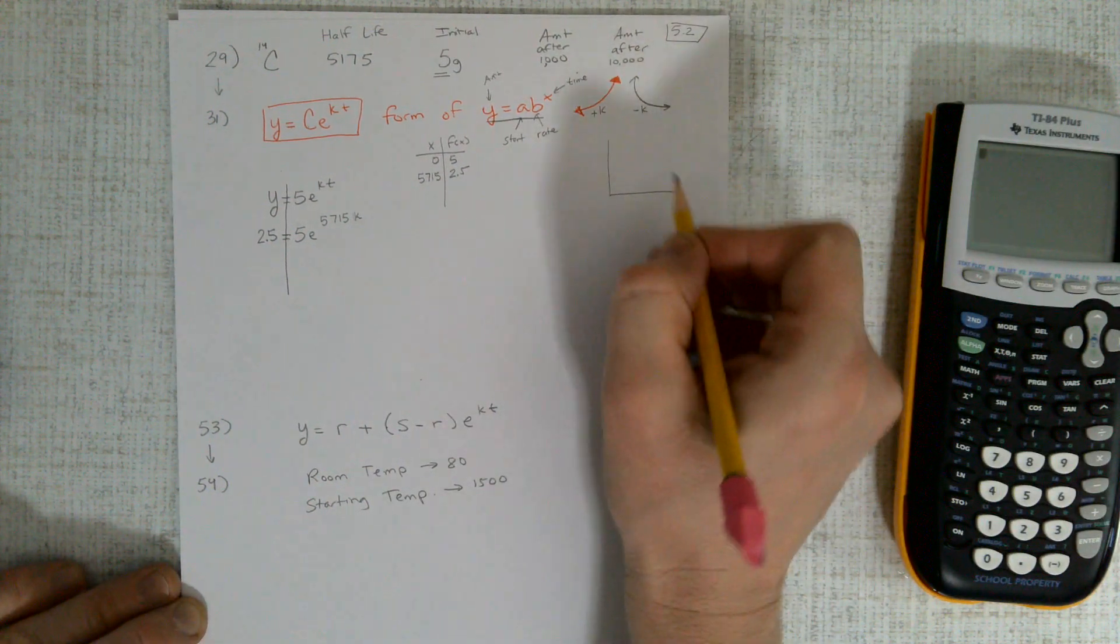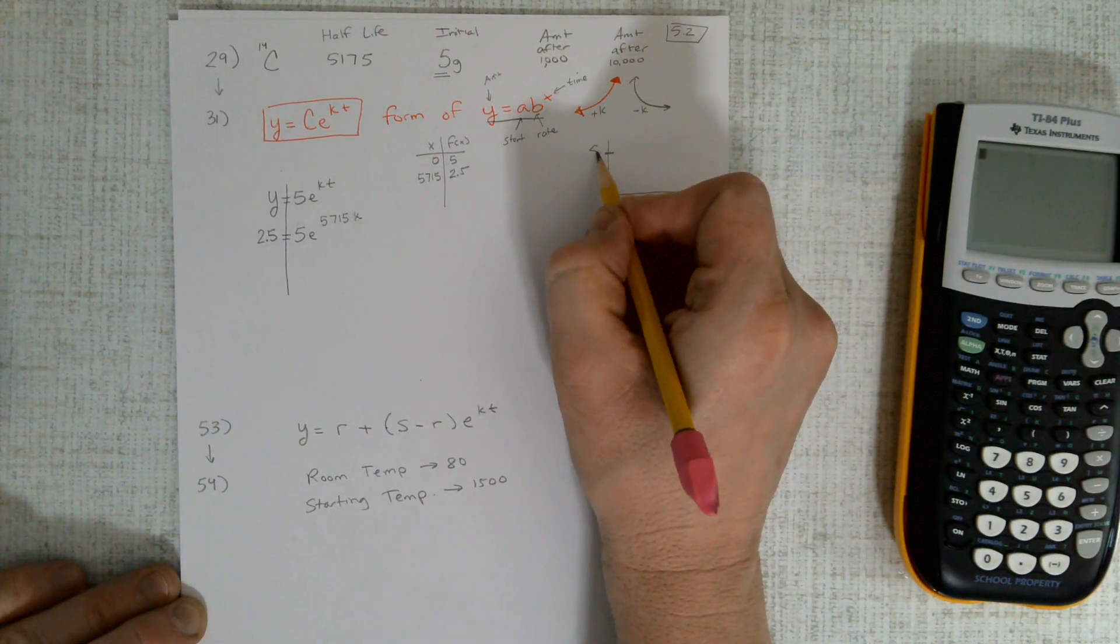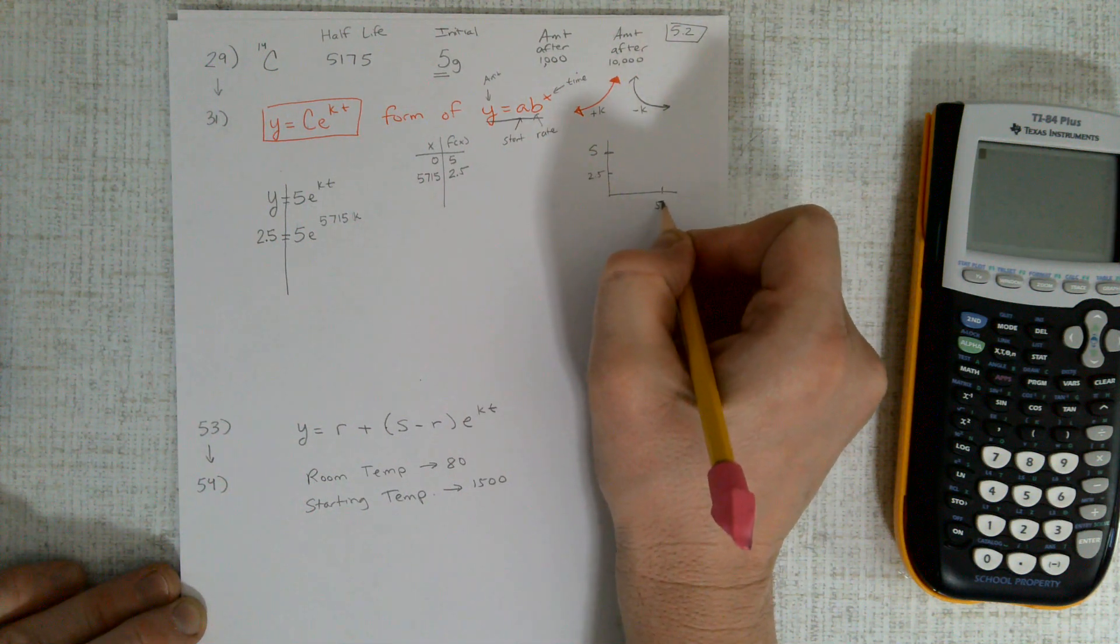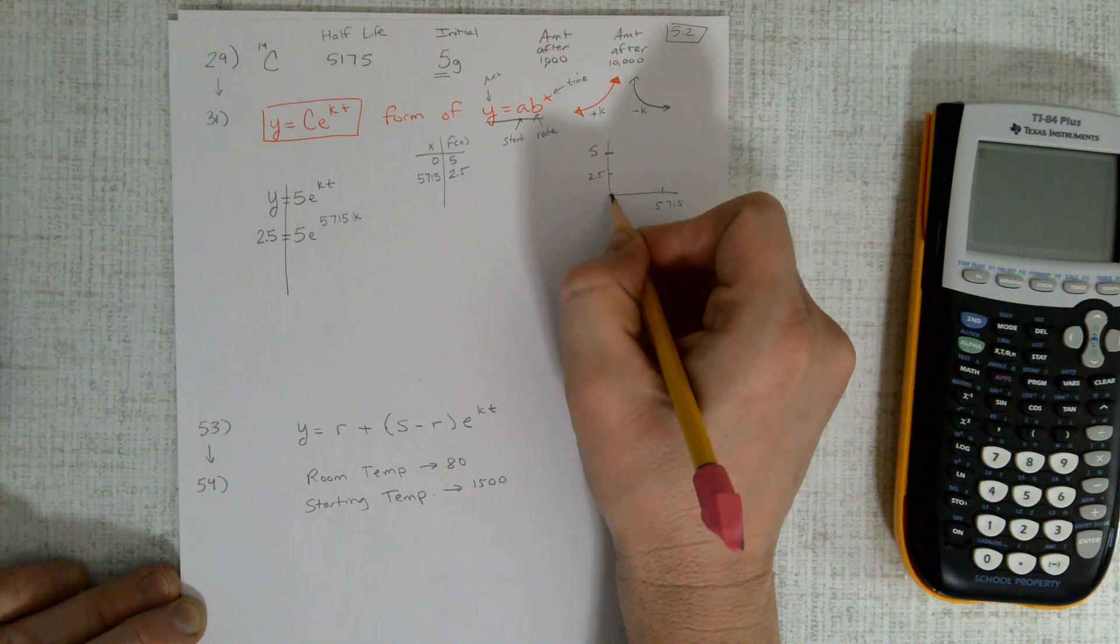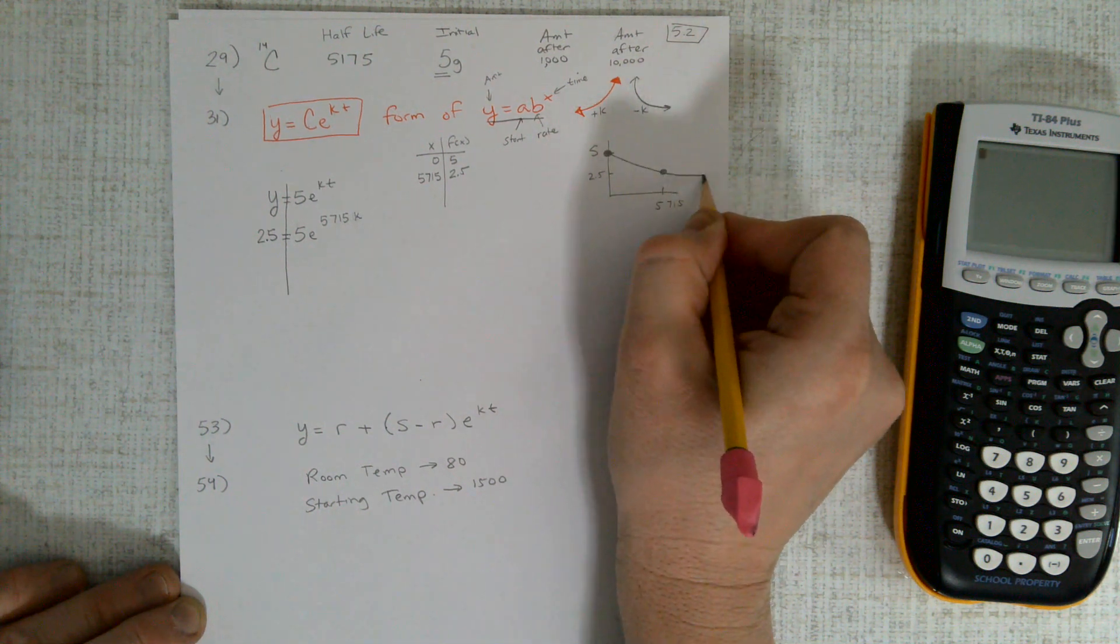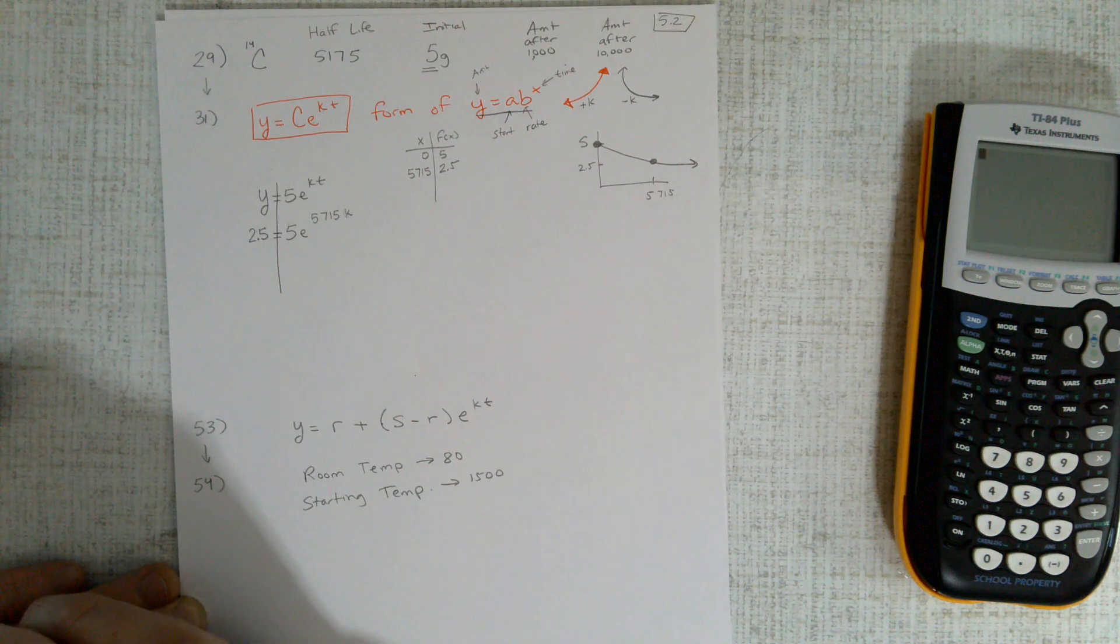If I drew a picture of that, it would look like this: input 5, and if I drop down to 2.5, that's going to take 5,715 years. So this first point's here, this next point here, and it's this gradual curve going down like that.